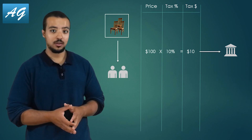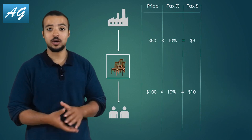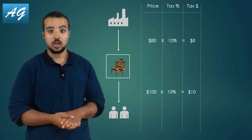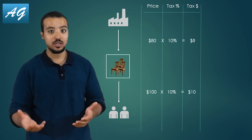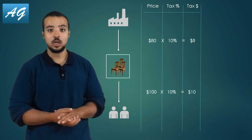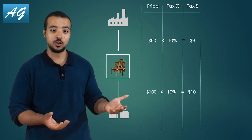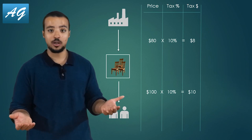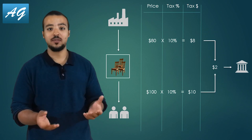This 10 USD doesn't belong to us — we have to pay it to the government. But there is also one more thing. As a store, we buy the shares from a factory inside the country for 80 USD each. So whenever we buy a share from the factory, we pay 80 USD plus 10% taxes, which is 8 USD. So we have collected 10 USD taxes from the customer, but paid 8 USD to our supplier, and the balance is only 2 USD — this is what we pay to the government.